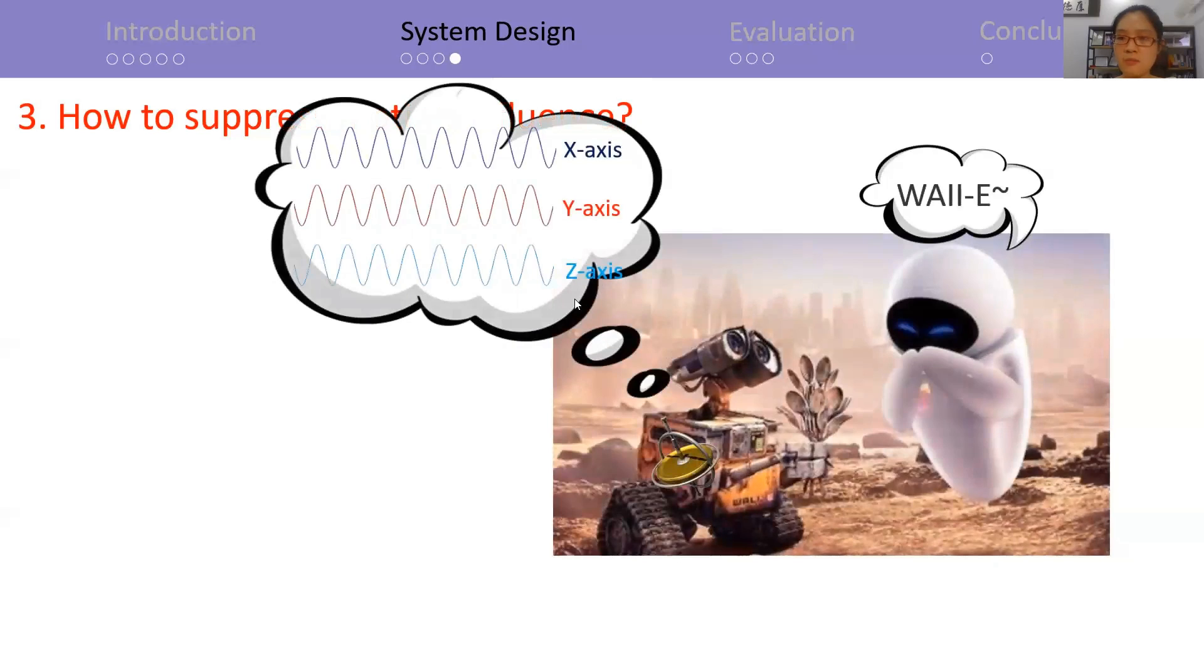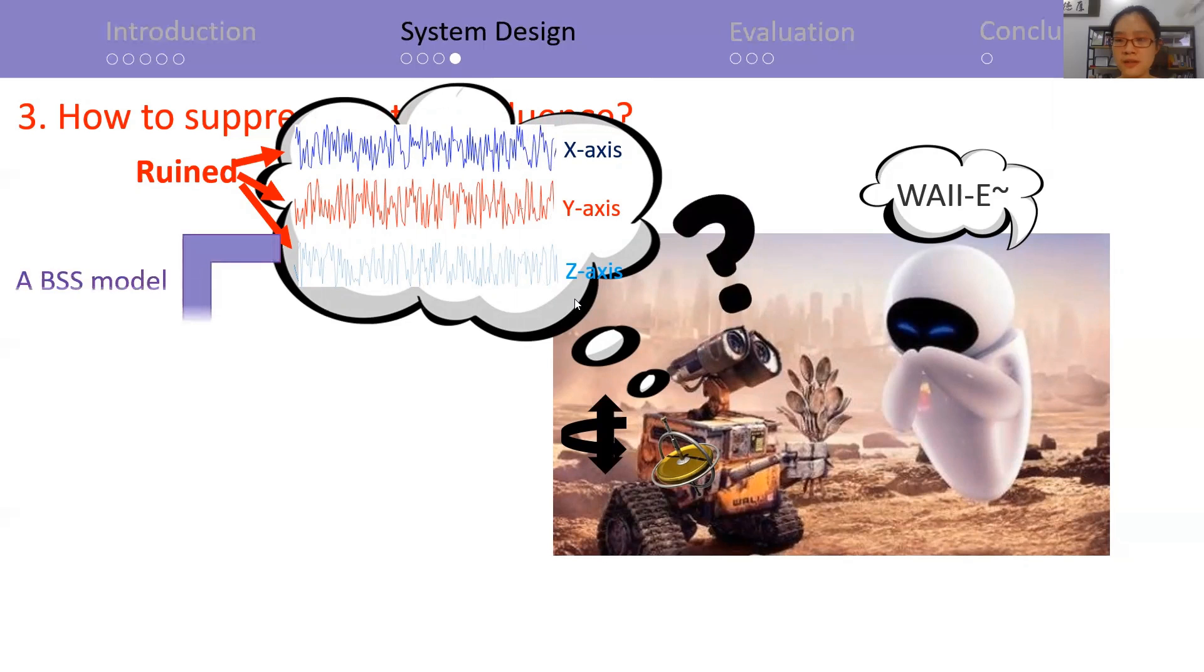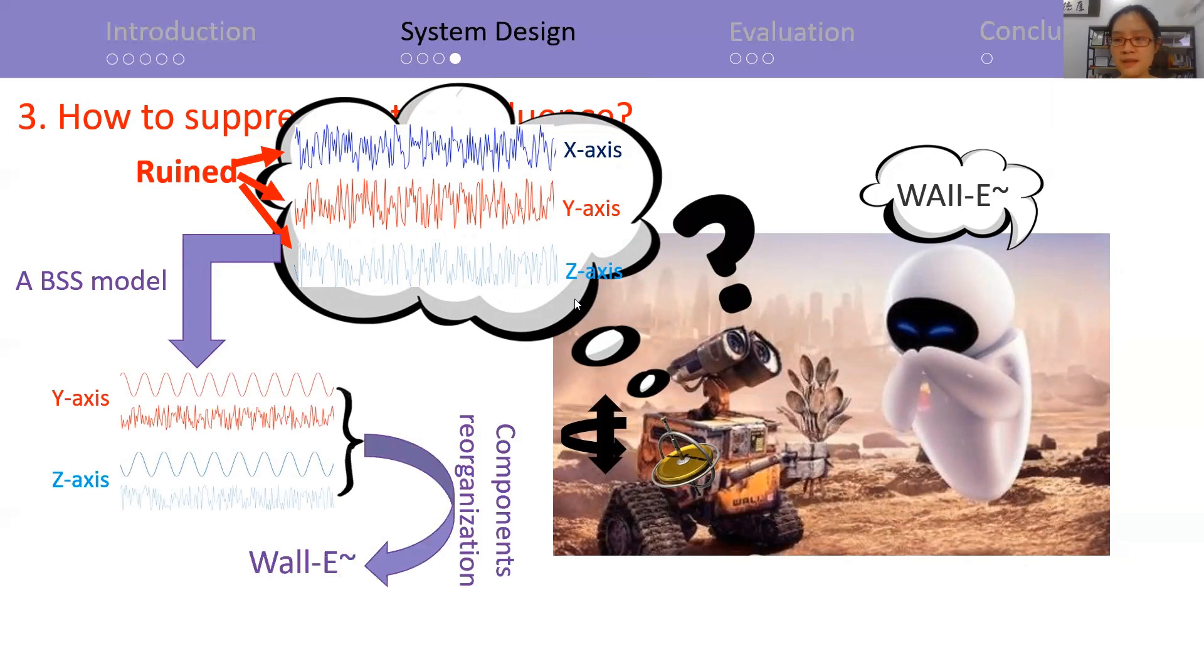Last but not least, motion interference is a key issue for gyroscopes. In this slide, EVE calls WALL-E, and WALL-E is moving. The gyroscope at WALL-E will produce additional readings, and the communication channels are ruined, so he couldn't make out what EVE is saying. To solve this issue, we adopt a BSS model and reorganize components based on the intra-axis characteristics. Therefore, Deaf-Aid manages to be robust against diverse movements in a mobile network.